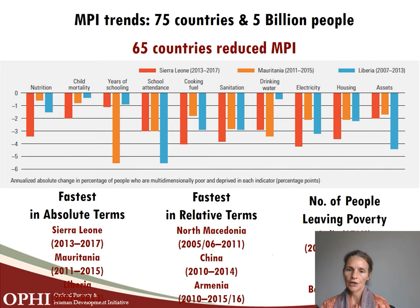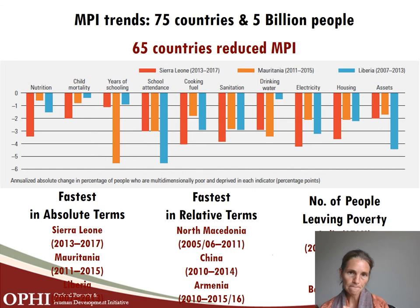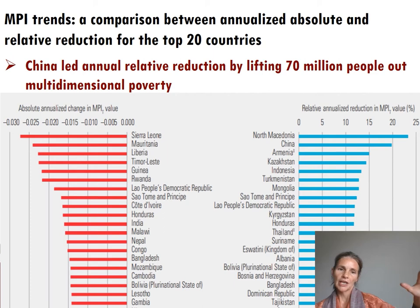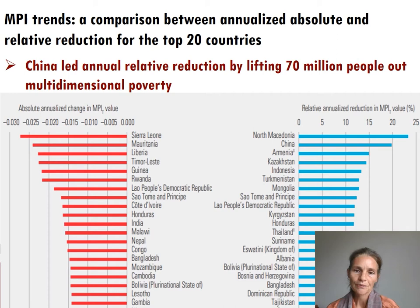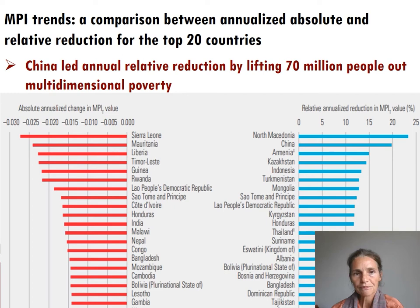The overall trends show that by different measures of change, we find different patterns of poverty reduction. This graph ranks all countries by speed of absolute reduction — shown with red bars on the left — and relative reduction — shown with blue bars on the right. It tends to be middle- or high-poverty countries with the fastest absolute reduction, though poverty levels vary, while less poor countries may show stronger relative reductions.